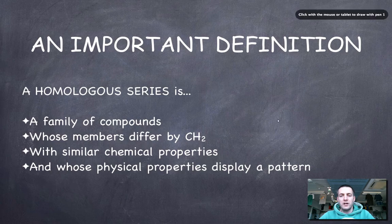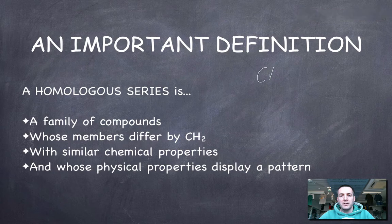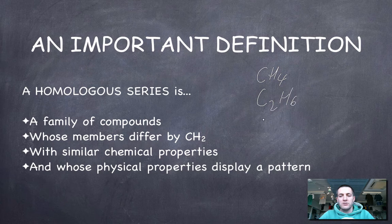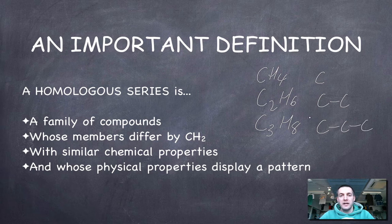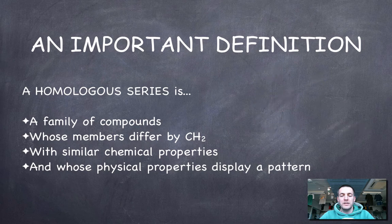But their members will differ by CH2. So as we saw on the previous slide, we might have CH4, we might have C2H6. These are the first three molecules that I showed you on the left, C3H8. And if you look at them, the way that they are different is each one in turn is bigger than the last by CH2.